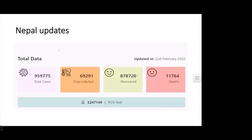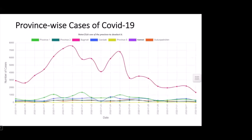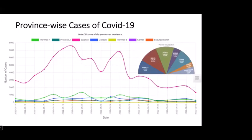In Nepal, total cases till February 2 were 0.9 million, with 69,000 currently infected, 0.8 million recovered, and more than 11,000 people dead from coronavirus. There have been 5 million PCR tests to date. Province-wise, Bagmati has the highest cases, followed by Province 1 and Gandaki, largely because Bagmati has the highest population density in the country.